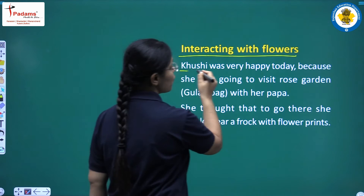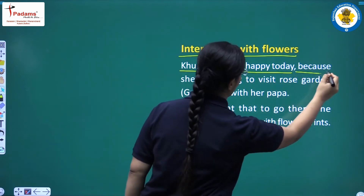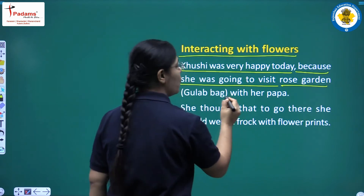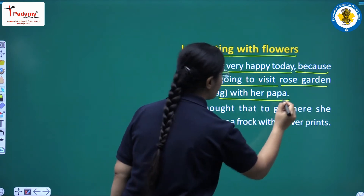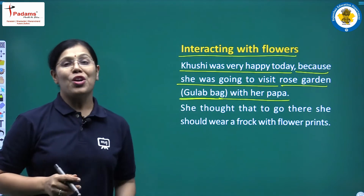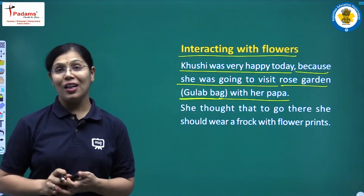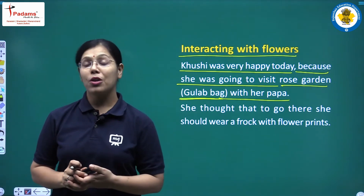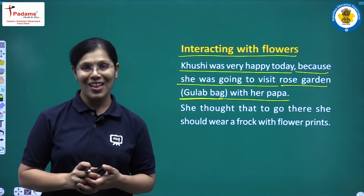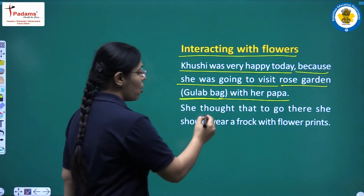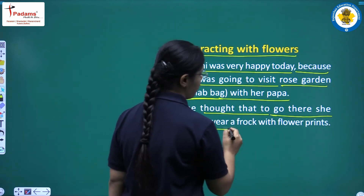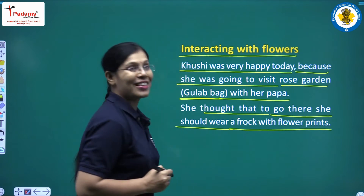Khushi was very happy today because she was going to visit a rose garden with her papa. Rose garden is a gulab park. Khushi was very happy today because she is going to visit the rose garden.